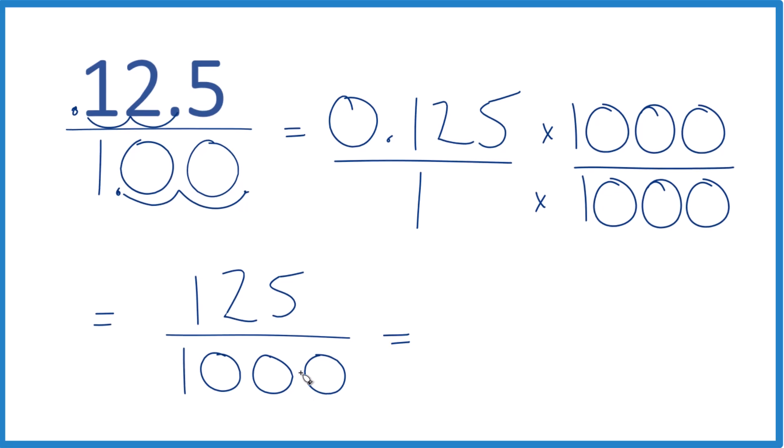Five would go into each of these, but 25 goes into 125. Five times 25 is 125. And 25 goes into 1000 40 times.